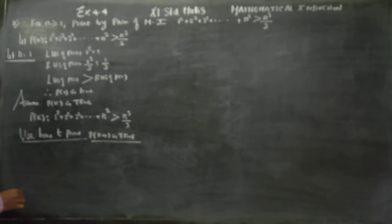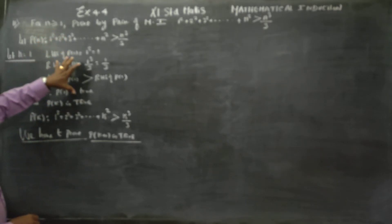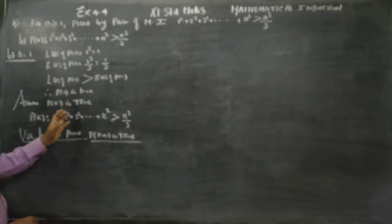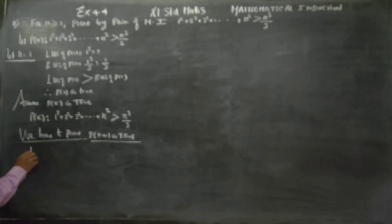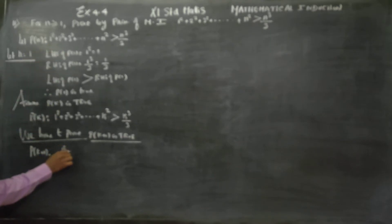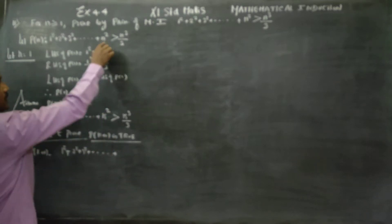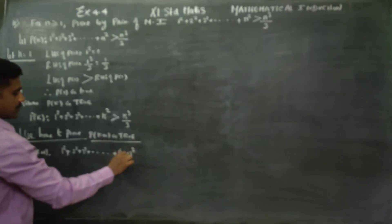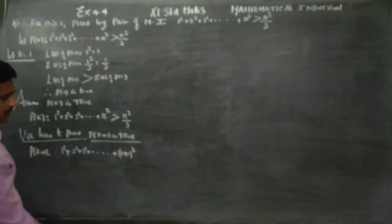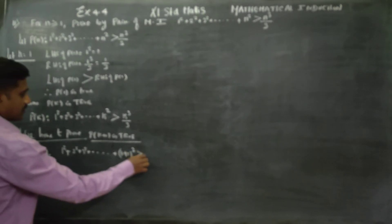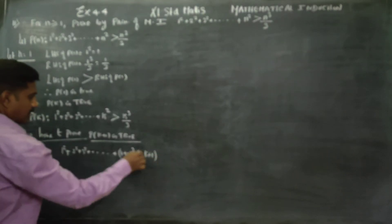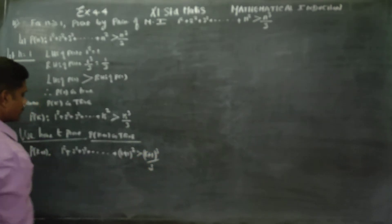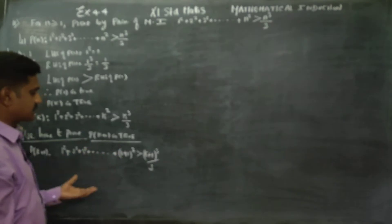This is very, very important. Naming is stage 1, which we prove is stage 2, P of k we assume is stage 3, and this is stage 4. What is P of k plus 1? If we add k plus 1, we get 1 squared plus 2 squared plus 3 squared dot dot dot plus k plus 1 whole squared, and we need to show this is greater than k plus 1 whole cube by 3.